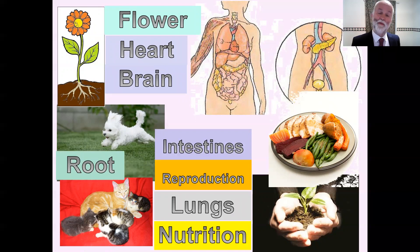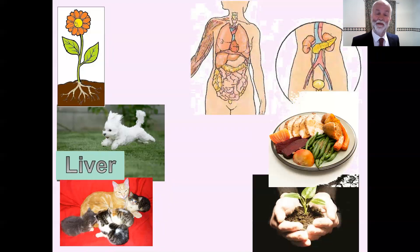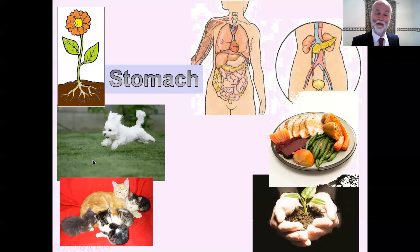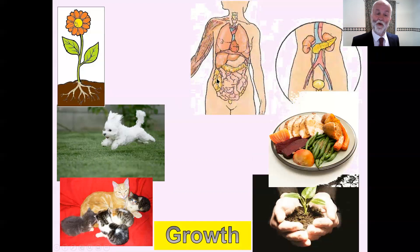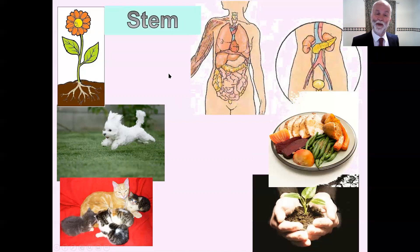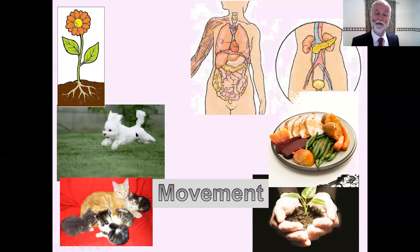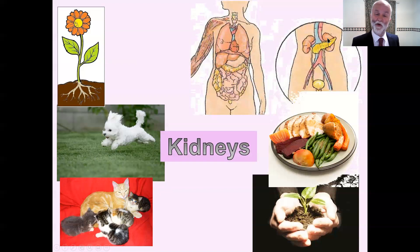A few other words to look at — again, pause the video and see what you can remember. Liver is over here — it's a good filtration system. Stomach takes the food down that you've eaten. Growth — well, this plant is growing. The flower is at the top. Stem connects the root up to the flower. Movement — this pup is running along, and all living things can move in their way, including plants moving upwards. Kidneys — here are your kidneys, you've got two of them, preparing your liquids to go down into your bladder.